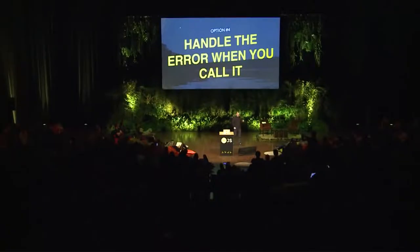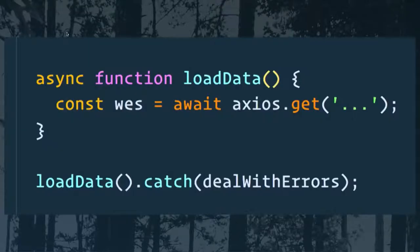The fourth option is to handle the error when you call the function. Sometimes you do want to handle the error at the call site because it's a special case that needs different handling. It's pretty simple: you make your async function called loadData, and maybe an error happens in it — when you call it you can just chain a dot-catch onto the end and deal with the error however you'd like.